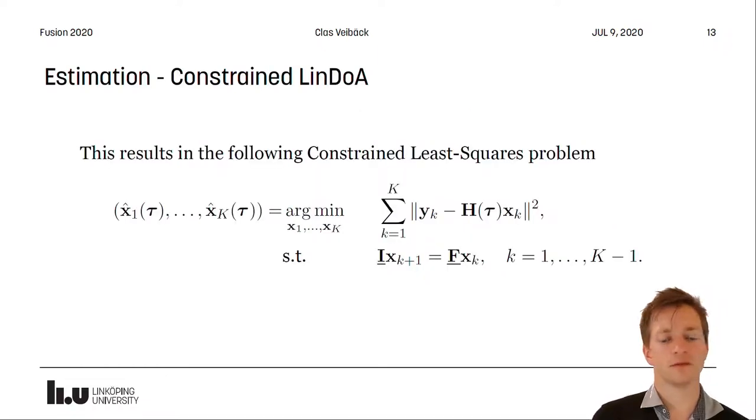This reduces to an optimization problem on this form which we can solve using constrained least squares. And as you can see here, we need to consider all the signals at the same time, which was an advantage of the LinDoA that we did not have to do before.